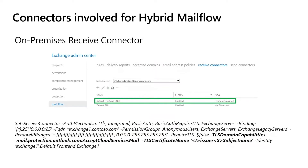The existing default front-end receive connector accepts email from Office 365. When you run HCW, this connector is modified to properly accept hybrid mail flow from the cloud. If you go through the HCW log, you will see the set-receive connector command being run, and a couple of parameters are modified. The first is TLS domain capabilities, which would be modified to accept cloud services mail. Second, the TLS certificate name will be set in the format of issuer and subject name of the third-party trusted certificate you have selected for Hybrid Mail Flow.